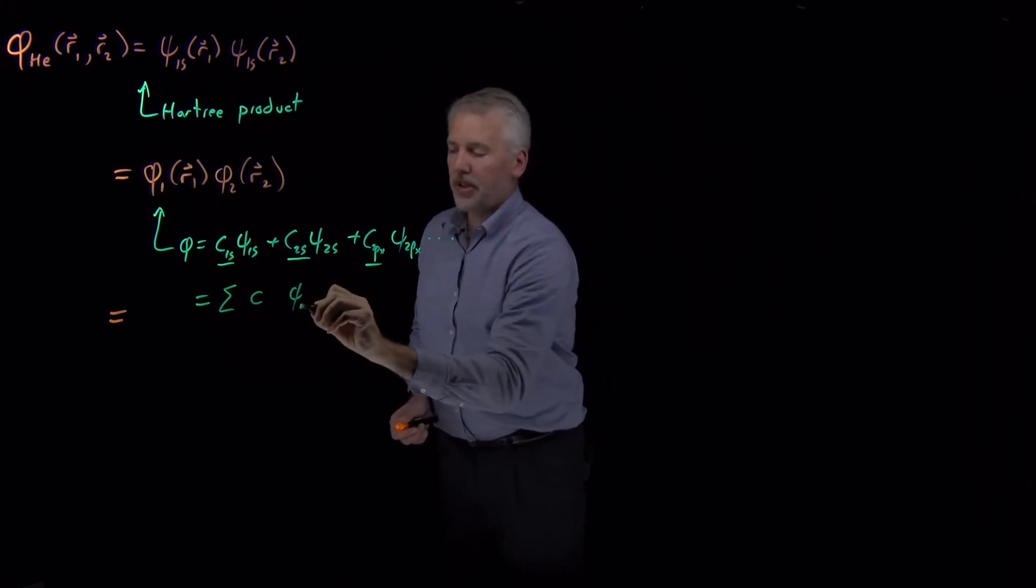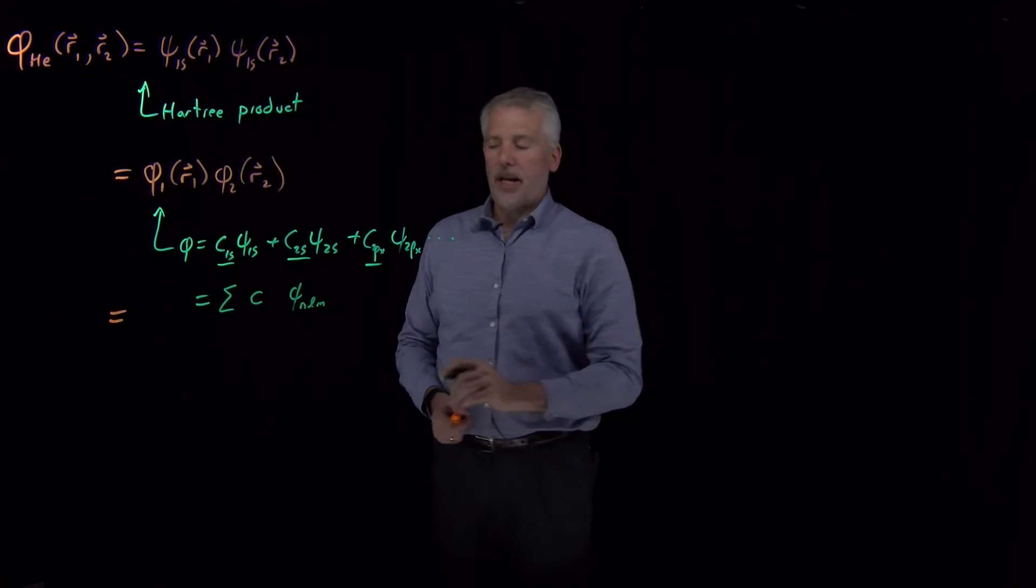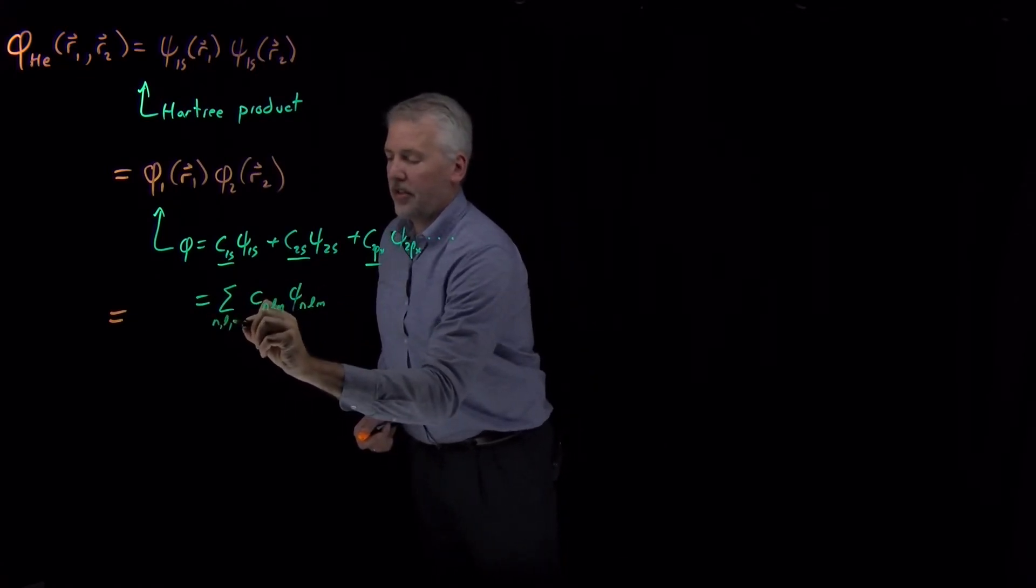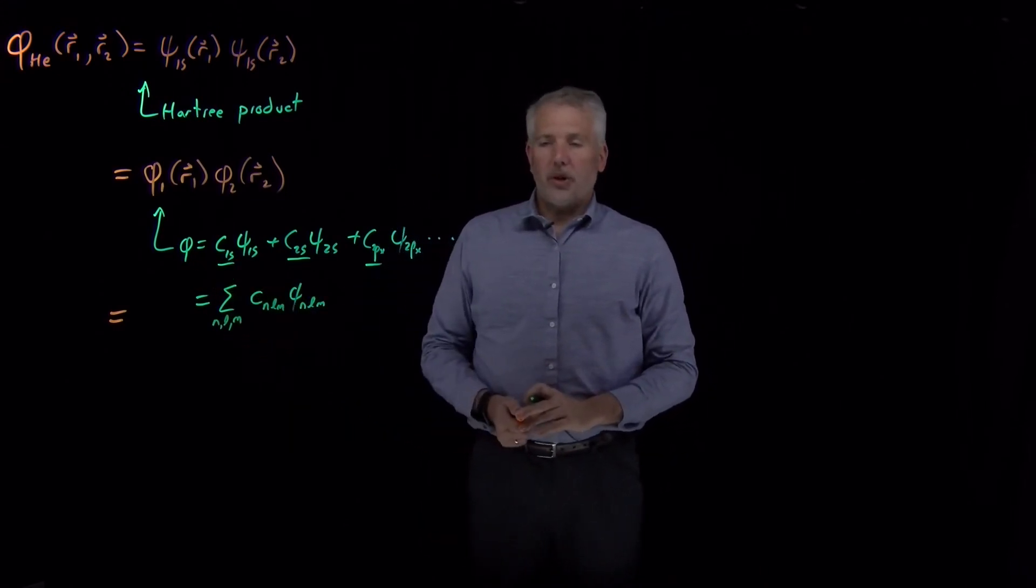Remember these hydrogen wave functions I can describe with a set of quantum numbers n, l, and m. So each of those has its own set of coefficients, and if I sum over all the n's and all the l's and all the m's, then this is how I'm writing my one electron wave function.